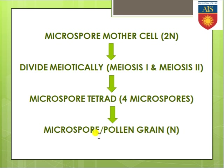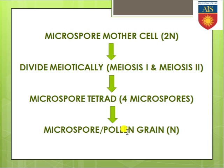From the microspore tetrad, when single microspores get separated, those microspores are considered as functional microspores because they are getting activated. These microspores or pollen grains now have the capability to pollinate or get transferred to the surface of the stigma. When they were in tetrahedral form they were not functional, but when separated they become functional and each pollen grain starts functioning as a single unit.